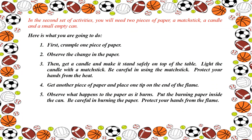In the second set of activities, you will need two pieces of paper, a matchstick, a candle, and a small empty can. Here is what you are going to do: First, crumple one piece of paper. Number 2, observe the change in the paper. Number 3, get a candle and make it stand safely on top of the table. Light the candle with a matchstick. Be careful in using the matchstick and protect your hands from the heat. Number 4, get another piece of paper and place one tip on the end of the flame. Number 5, observe what happens to the paper as it burns. Put the burning paper inside the can. Be careful in burning the paper and protect your hands from the flame.